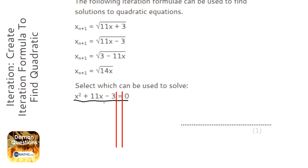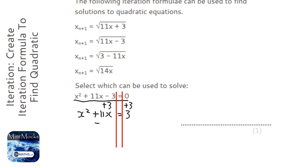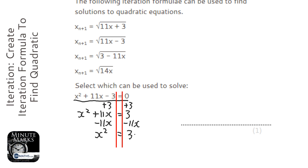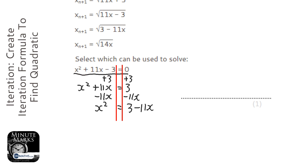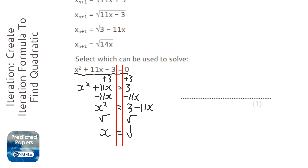So what I'm going to do is add three to both sides here, so we've got x squared plus 11x still there, equals three. Then I'm going to take away 11x from both sides, giving three minus 11x. Finally, I'm going to square root both sides, so we've got x equals root of (3 minus 11x).